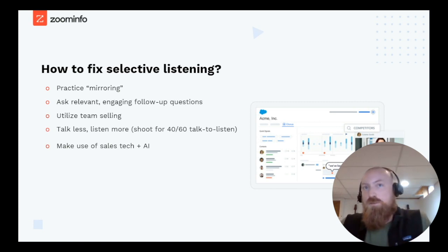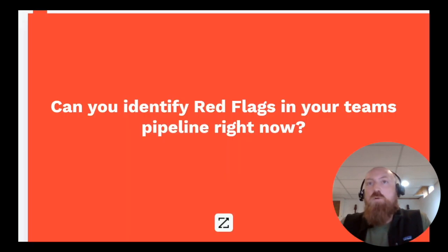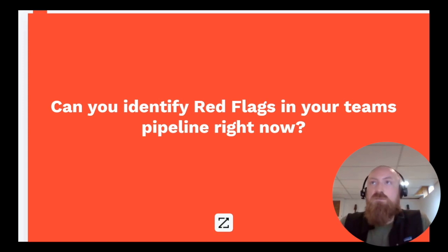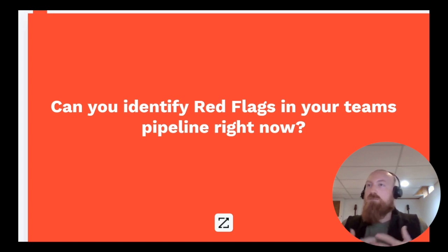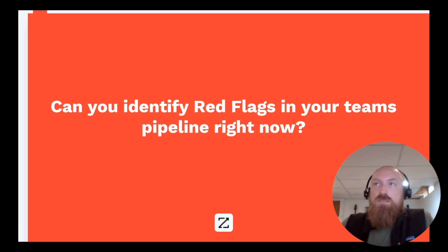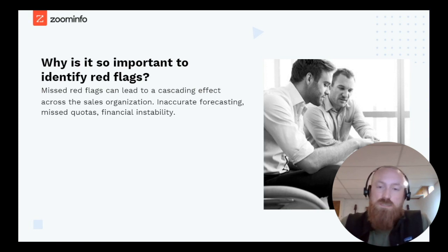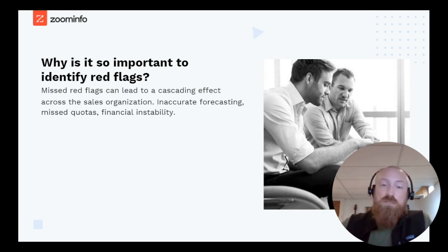That also allows you to track red flags within a deal using conversational intelligence. Who here is struggling to identify red flags in their team's pipelines right now? Even if you think you have a very good handle on it, depending on the size of your teams or organizations, it's a mountain that seems impossible to climb. These missed red flags can lead to a cascading effect across the organization — inaccurate forecasting, missed quota, financial instability, and strategic objectives that are missed or become impossible.